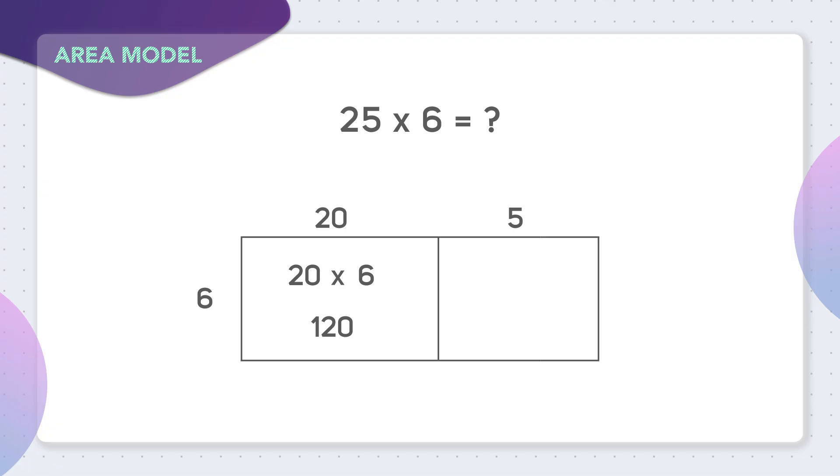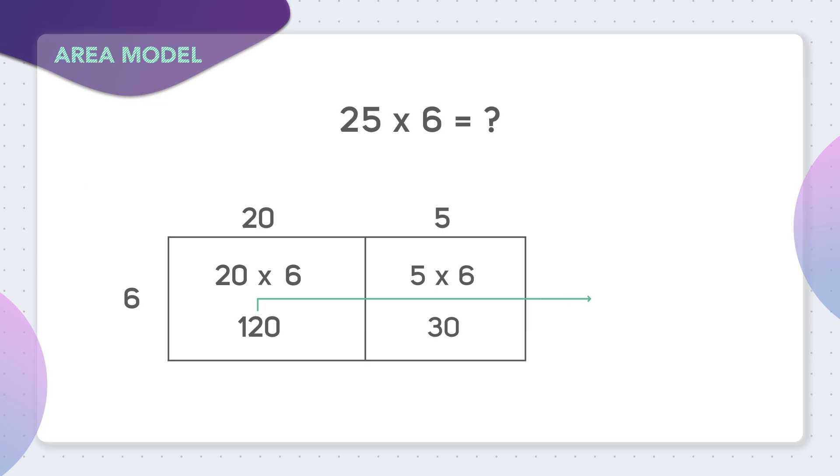In this other section of our area model, we need to multiply 5 times 6. We know 5 times 6 equals 30. Now that we've solved each piece of our area model, all we need to do is add the two pieces together. We could add 120 plus 30.